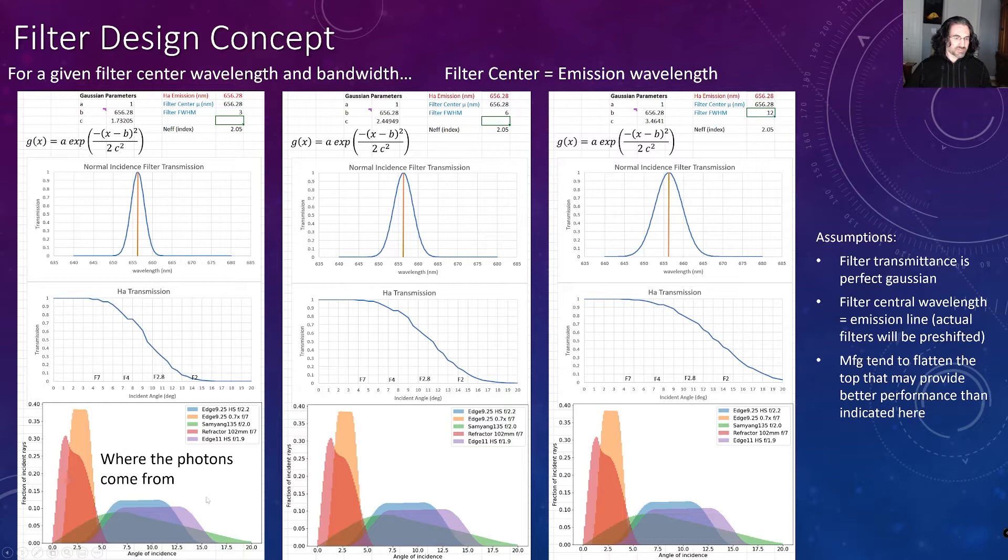Now I have this graph down here on the bottom that shows where the photons are coming from for different optical systems. So I've updated this now to actually include a refractor, in this case, 102 millimeter F7 refractor. And we can see that we're collecting photons all the way from zero degrees up to about five degrees. So in this case, with an ultra narrow bandwidth filter, all of those photons are in a region where they will be 100% transmitted.